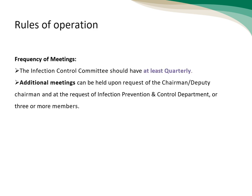Regarding rules of operation — frequency of meetings: the Infection Control Committee should meet at least quarterly in every healthcare facility. Additional meetings can be held upon request of the Chairman, Deputy Chairman, or at the request of the IPC department, or three or more members, when urgent matters arise.